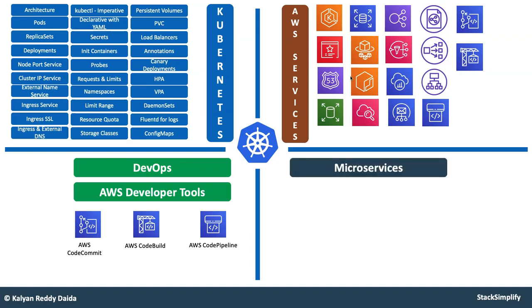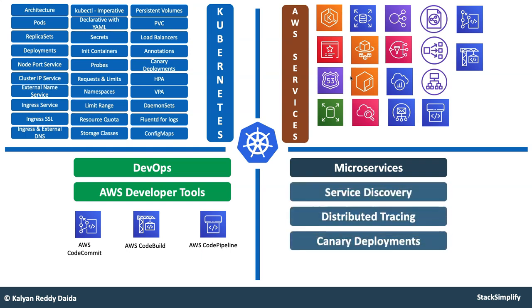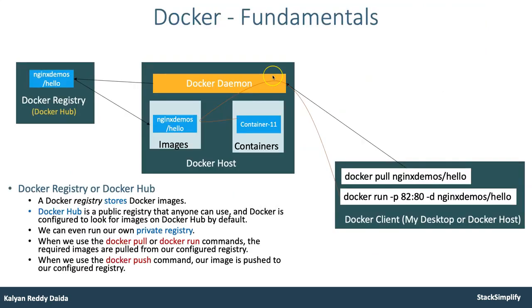Next is microservices. From a microservices perspective, the core concepts in relation with Kubernetes will be service discovery, distributed tracing, and canary deployments. Those also we have looked into before moving on to bigger things in Kubernetes.